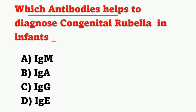First question: Which antibody helps to diagnose congenital rubella in infants? Options: A) IgM, B) IgA, C) IgG, D) IgE. The antibody which helps to detect congenital rubella in infants is IgM. Option A is the correct answer.